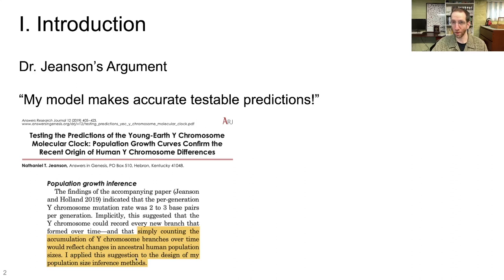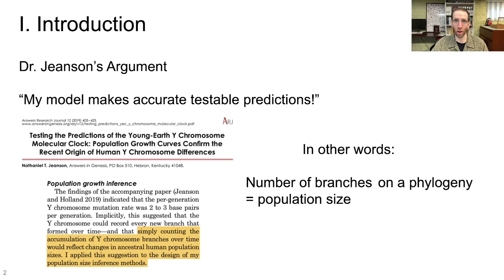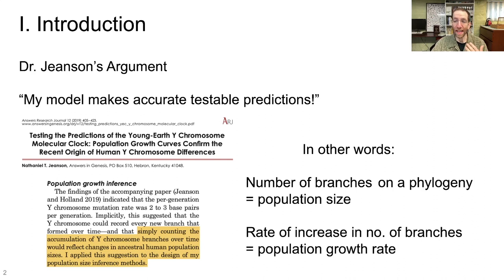In other words, he's saying that the number of branches on a rooted Y chromosome phylogeny is a proxy for the population size, and the rate of increase in the number of branches is a proxy for the population growth rate. You can correlate those two things together, make testable predictions about one, and then test them using the other data set. That's what Jeanssen is saying you can do here.